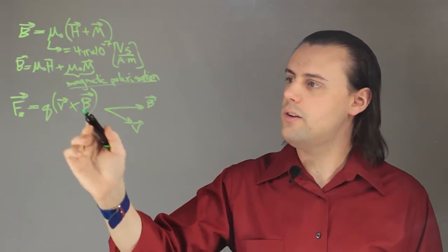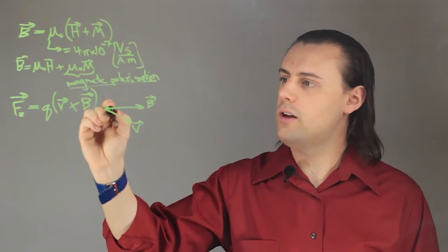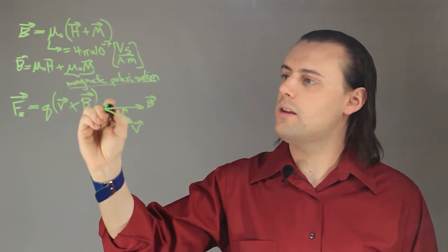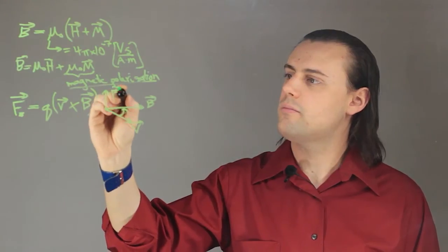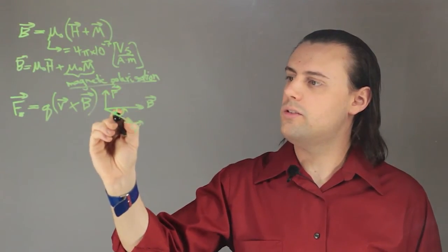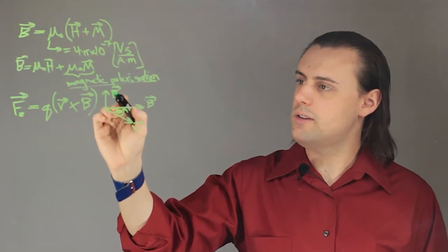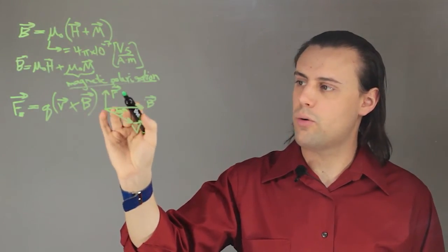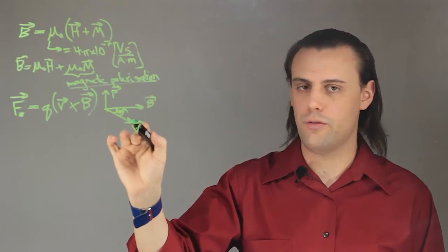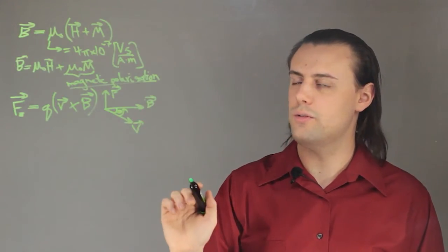Times the cross product between the velocity vector and the magnetic field vector. If the charged particle in question is positive, then the direction of the Lorentz force will be in this direction. So this is some angle theta between these two vectors, and we see that the Lorentz force is orthogonal to both the velocity and the magnetic field vector.